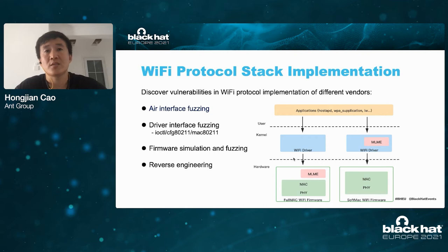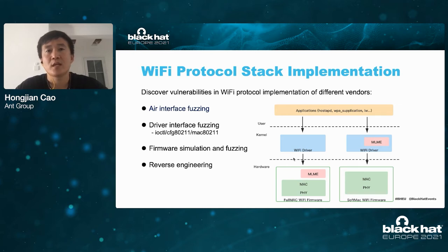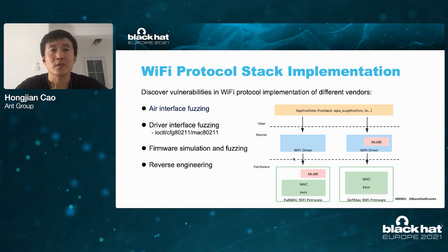The Wi-Fi protocol stack consists of three parts: applications in the user layer, the Wi-Fi driver in kernel, and firmware in hardware. The user layer applications are used to connect Wi-Fi, manage the device's Wi-Fi connection, or read and write network interface configurations. According to the location of the MLME entities, we can divide wireless chips into two types: SoftMAC and FullMAC. SoftMAC bears the MLME in the Wi-Fi driver, while FullMAC bears the MLME in hardware, though there are mixed implementations.